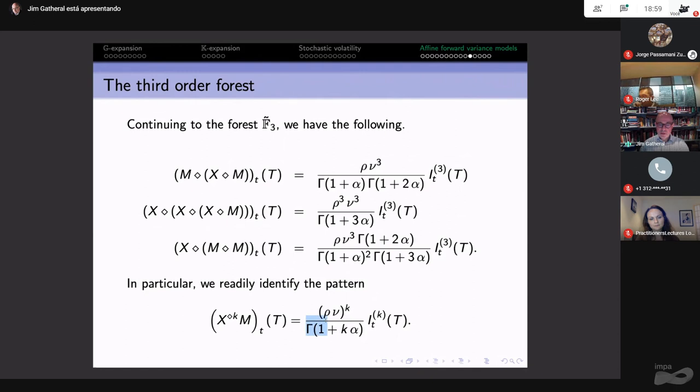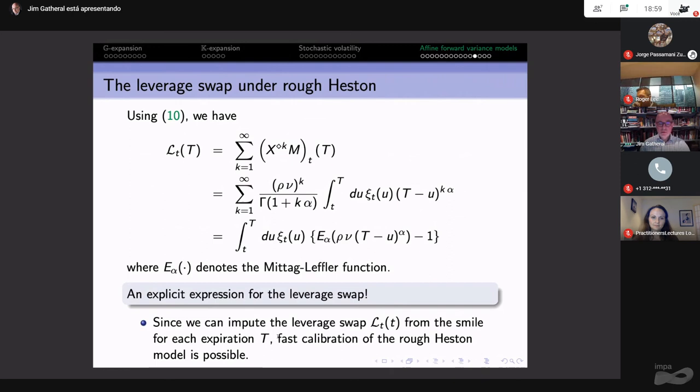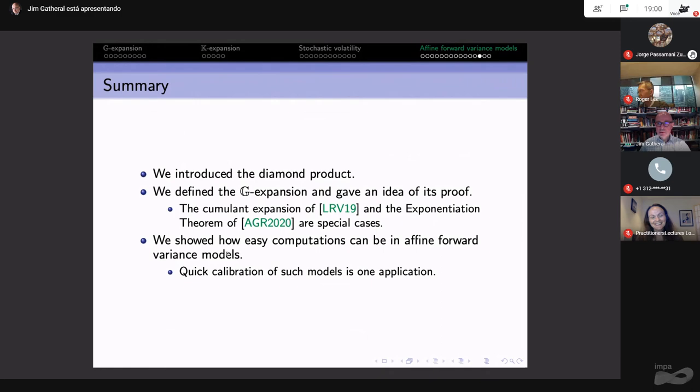If you think of SPX there are like 35 expirations today, that means 35 values of the leverage swap each depending on three parameters of some model. It's wildly over-determined and you can quickly calibrate your model. In the case of the rough Heston model you can calibrate your model in a fraction of a microsecond if you wrote it efficiently. My code runs in a couple of microseconds.